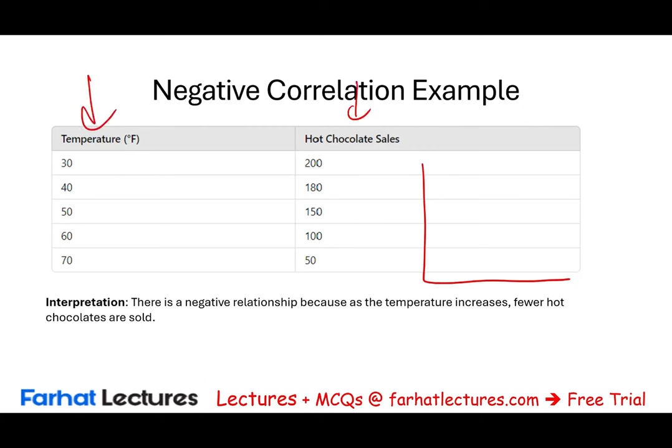Now let's look at a data example where there is no correlation — shoe size and salary. There is no relationship between shoe size and salary. When shoe size is 8, salary is $50,000; shoe size 9, salary is $60,000 — going up; shoe size 10, it goes down; shoe size 11, it goes up; shoe size 12, it goes down. There is no clear pattern. Some with larger shoes make more money, others less — no relationship exists.